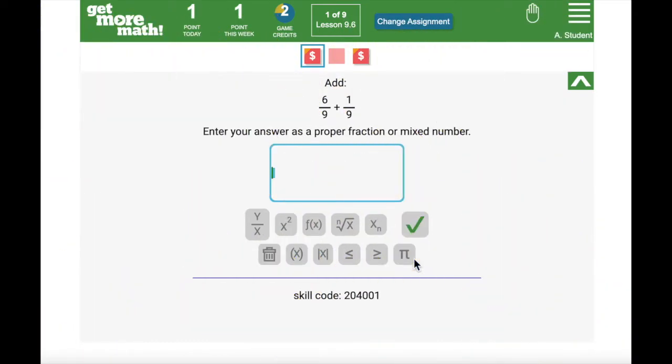To earn points in Get More Math you must answer the problem correctly on the first try. The square of that skill that I answered correctly is now faded and I can no longer choose that skill to work on. You may only work on problems that have a dollar sign. These are problems that are worth a point.